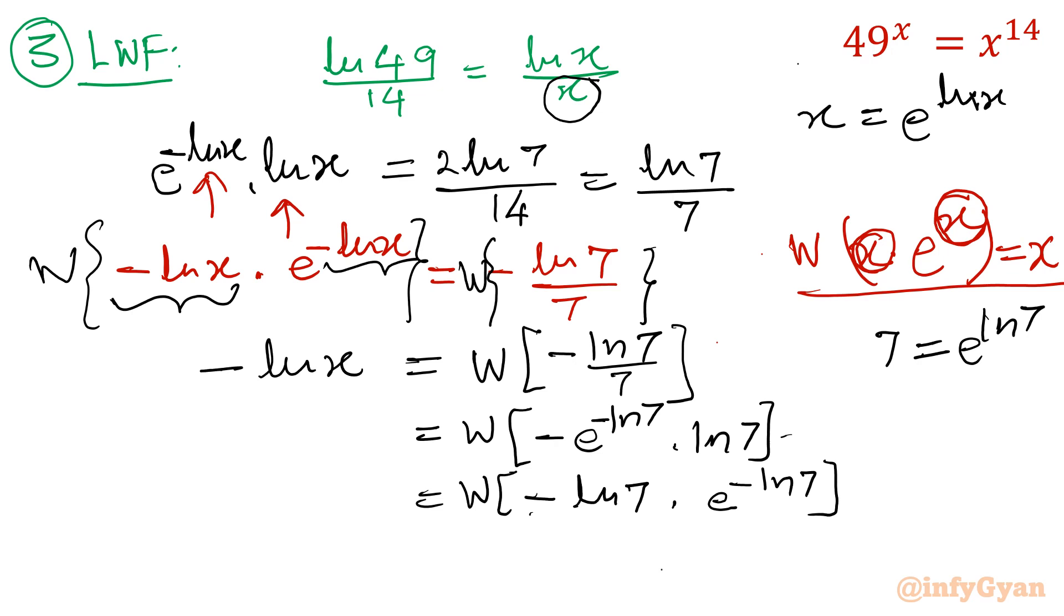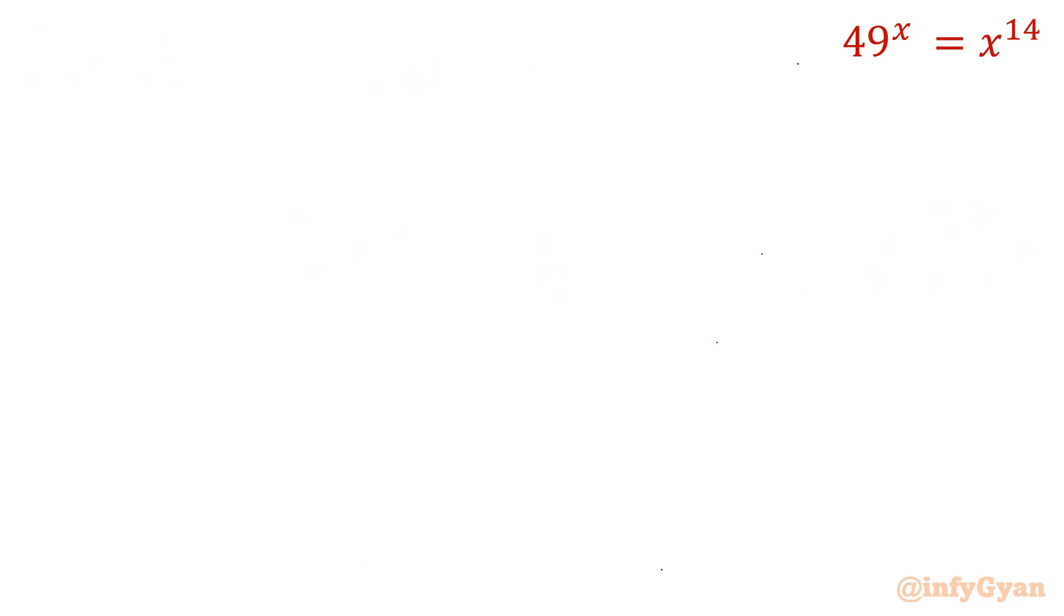I will write here -ln 7 times e^(-ln 7). Once I will take Lambert W function of this, see it is matching. So I will write -ln 7. -ln x. Comparing both sides I will get x equal to 7. Up to this point there is no concern.